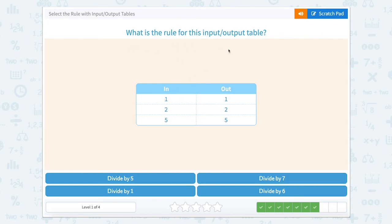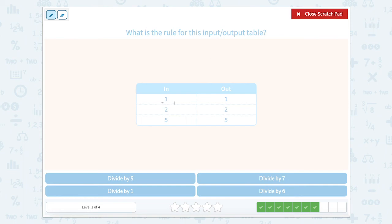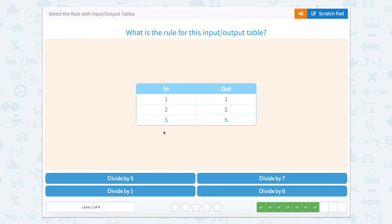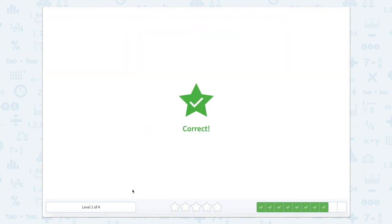Now, if we're looking here, what is the rule for the input-output table? When we look at these numbers, I'm looking, I see 1 and 1, 2 and 2, 5 to 5. Well, if we know how to divide by 1, we know that anytime you divide a number by 1, you get itself. So let's close that scratch pad and hit divide by 1.